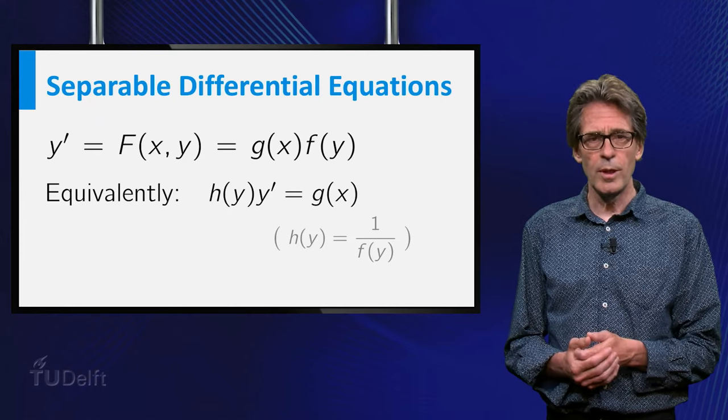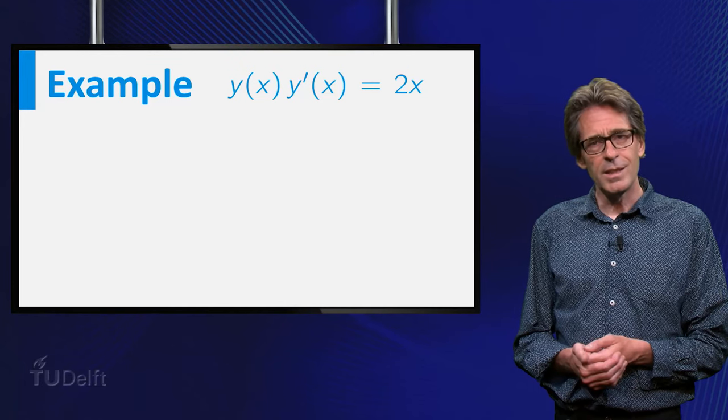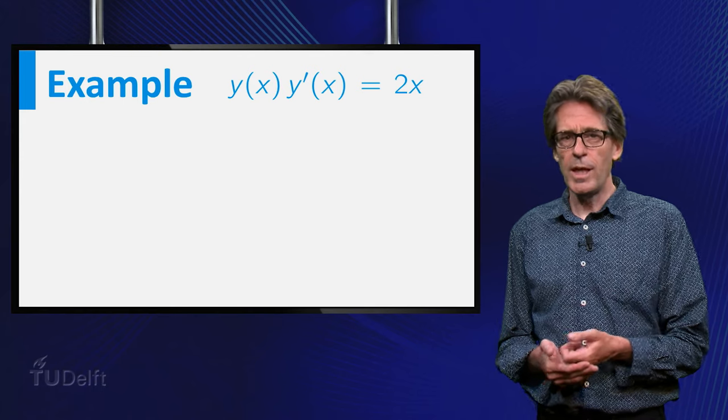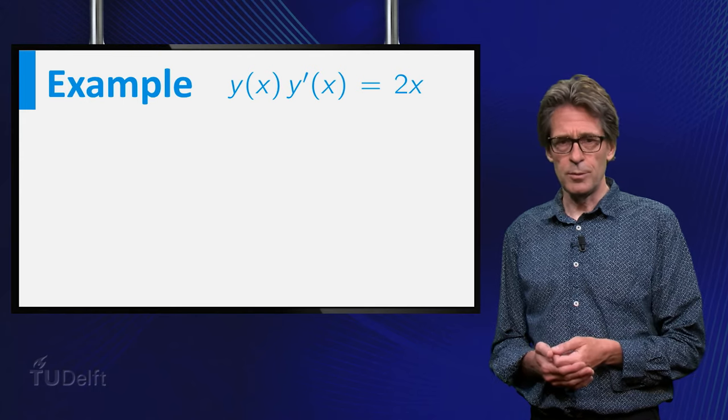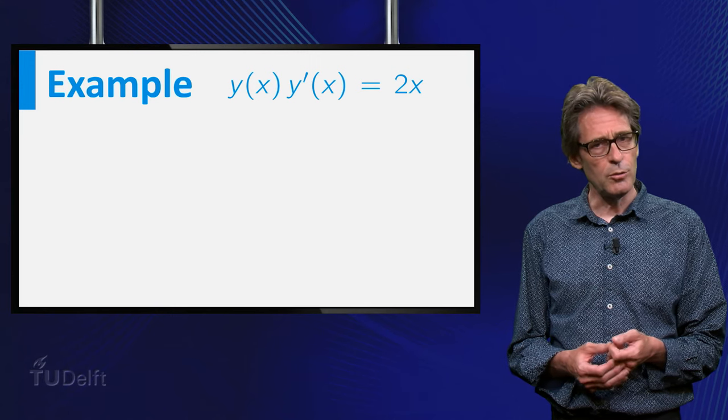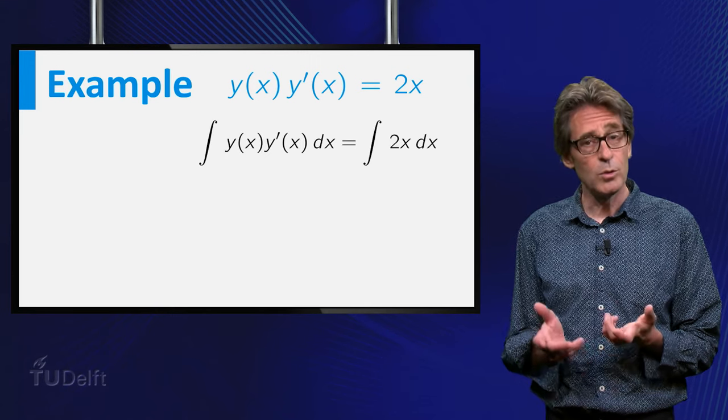Time to look at the example. To make the method clear, I have made the x explicit, y of x times y prime of x has to be equal to 2x. The route to the solution of an equation of this form is simply to integrate both sides with respect to x.